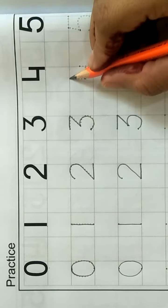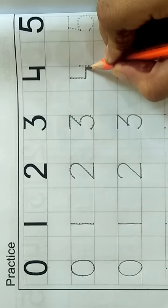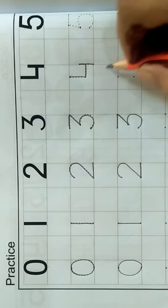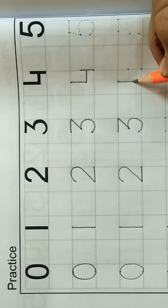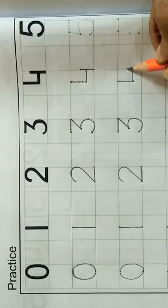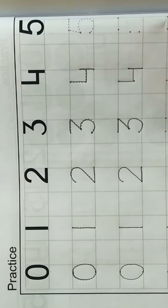4. Straight. Go right side. Go up. Go down. 4. Down, right, up, down. 4.